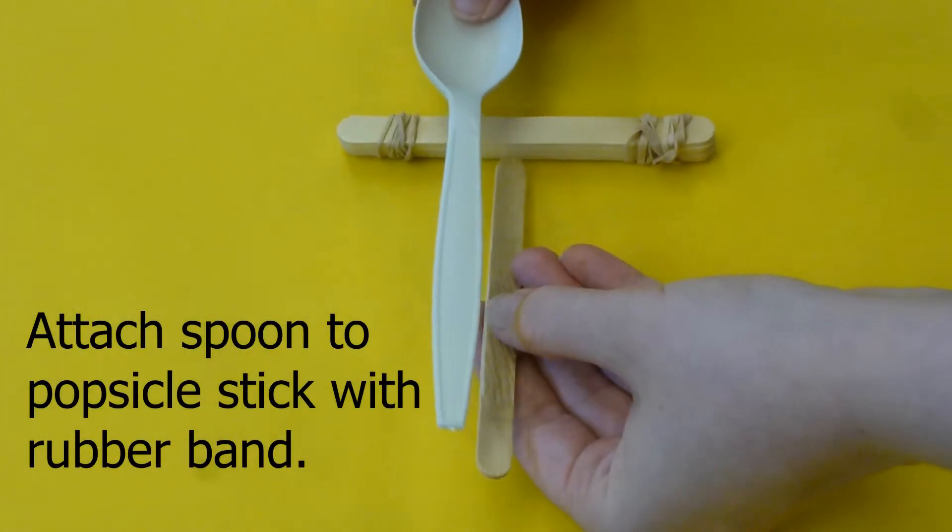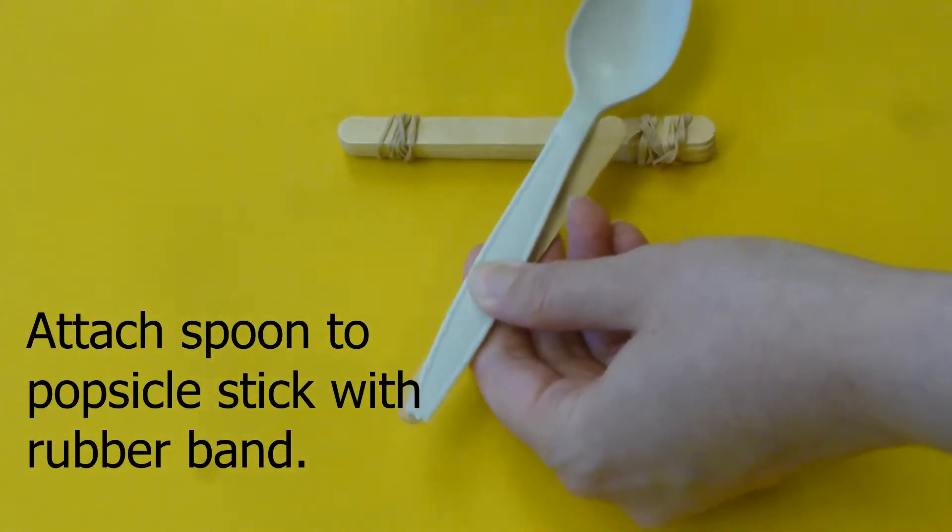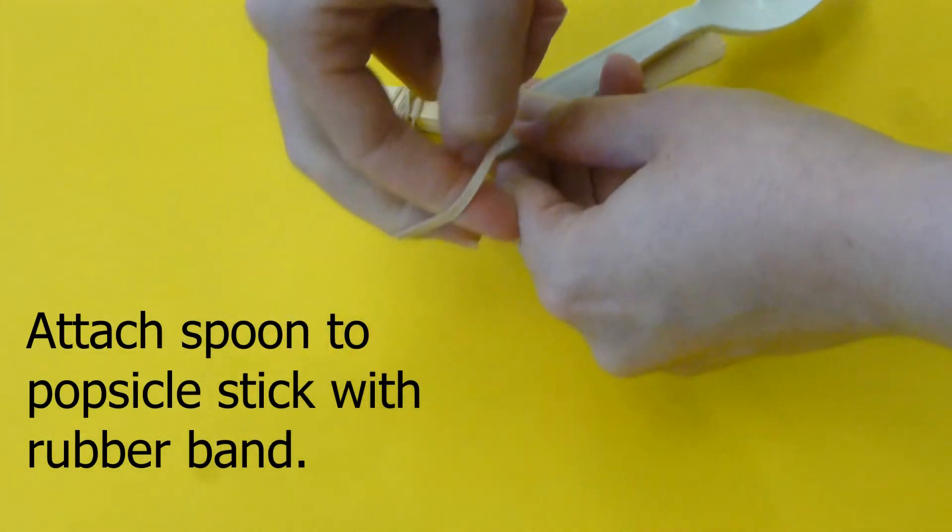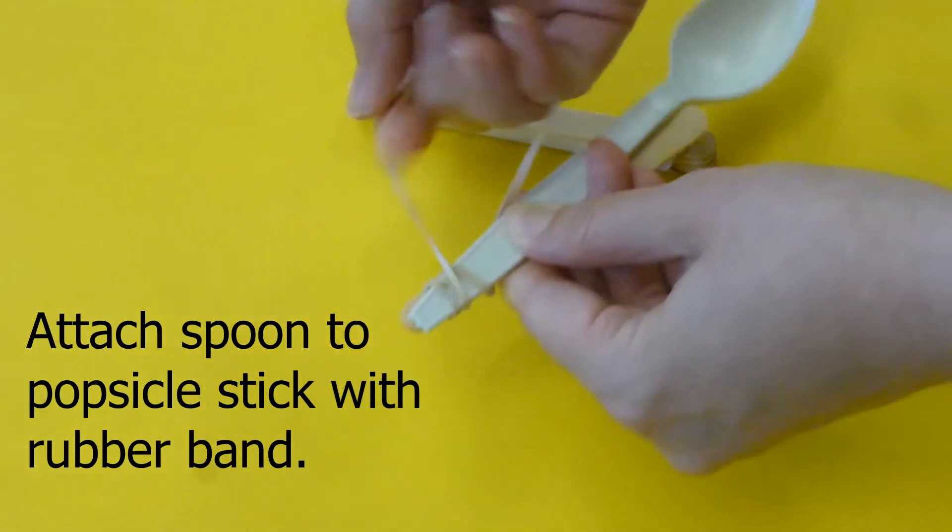Next, take a popsicle stick and your plastic spoon, line them up at the bottom ends and attach them with your rubber band. This will be the lever of our catapult.